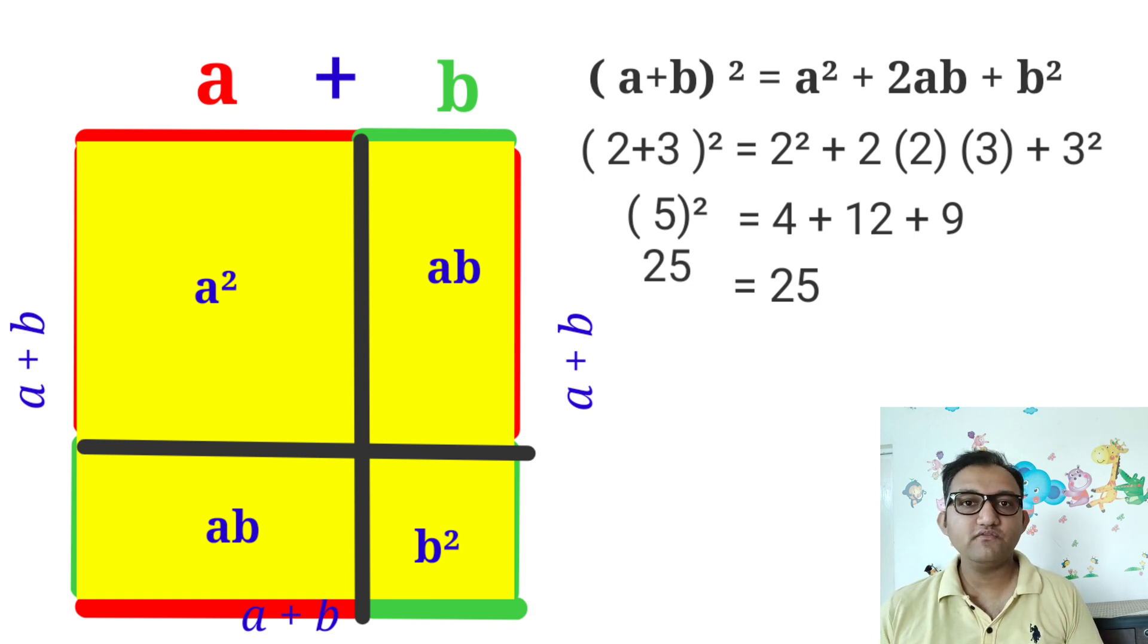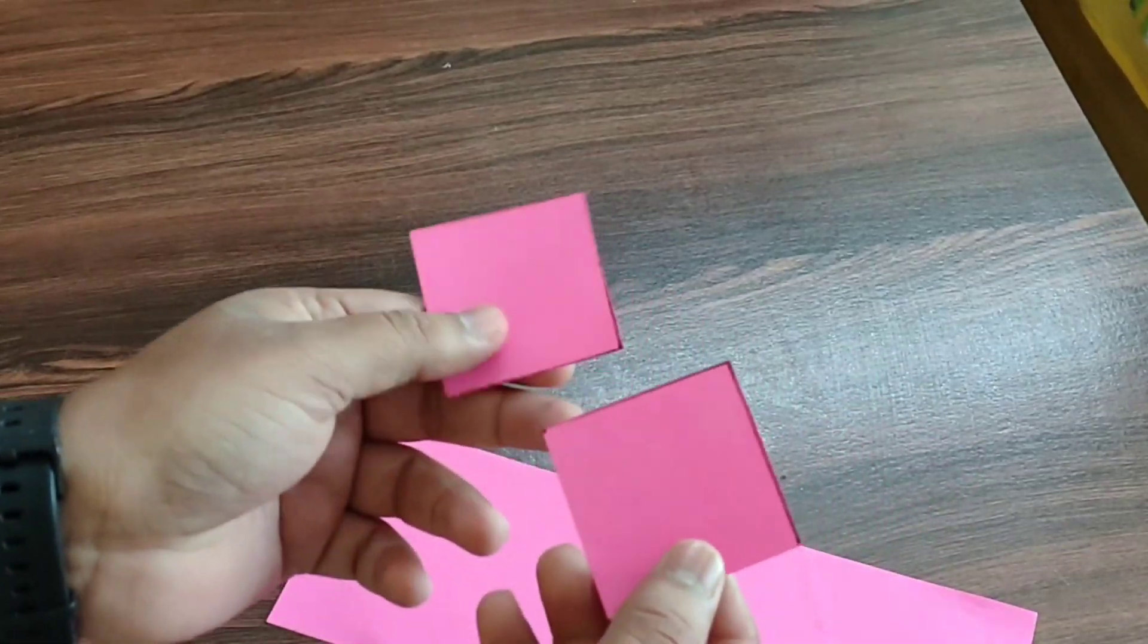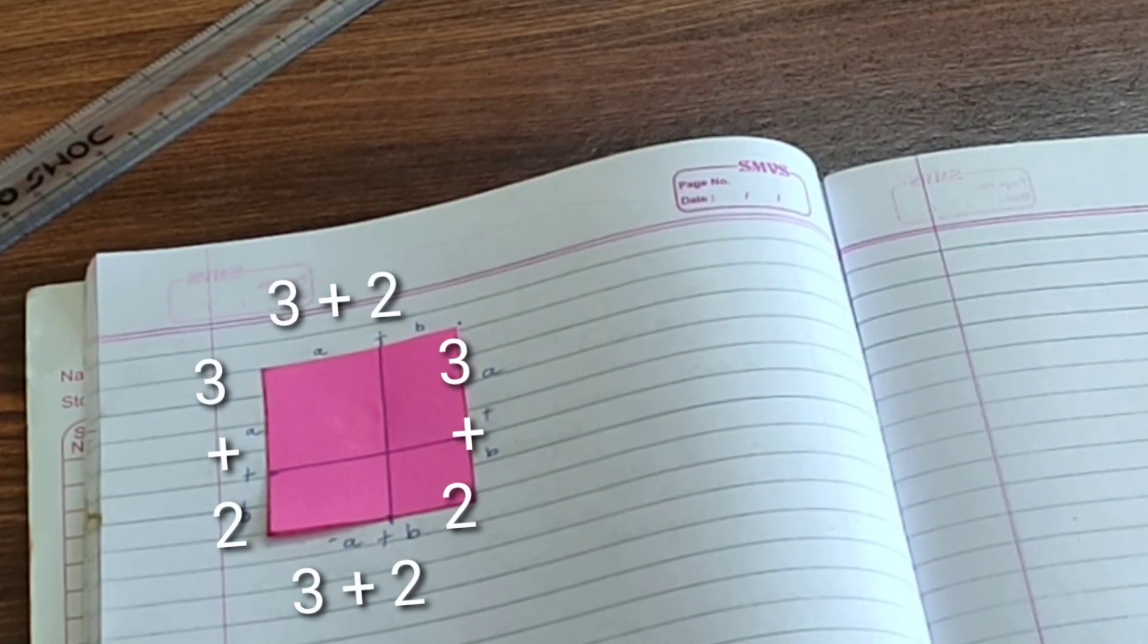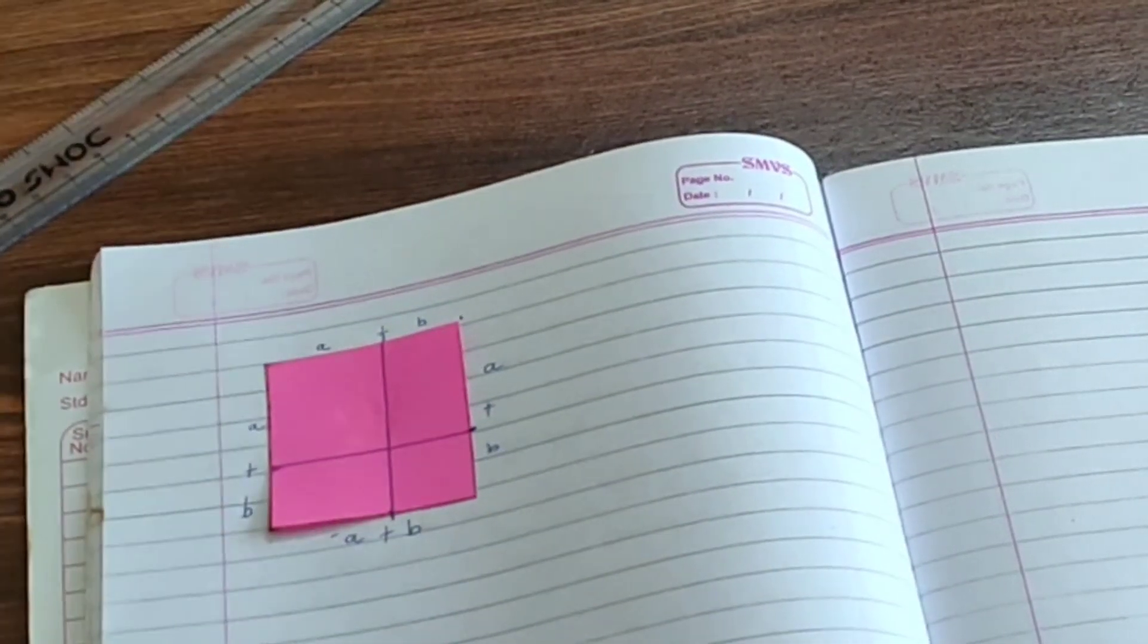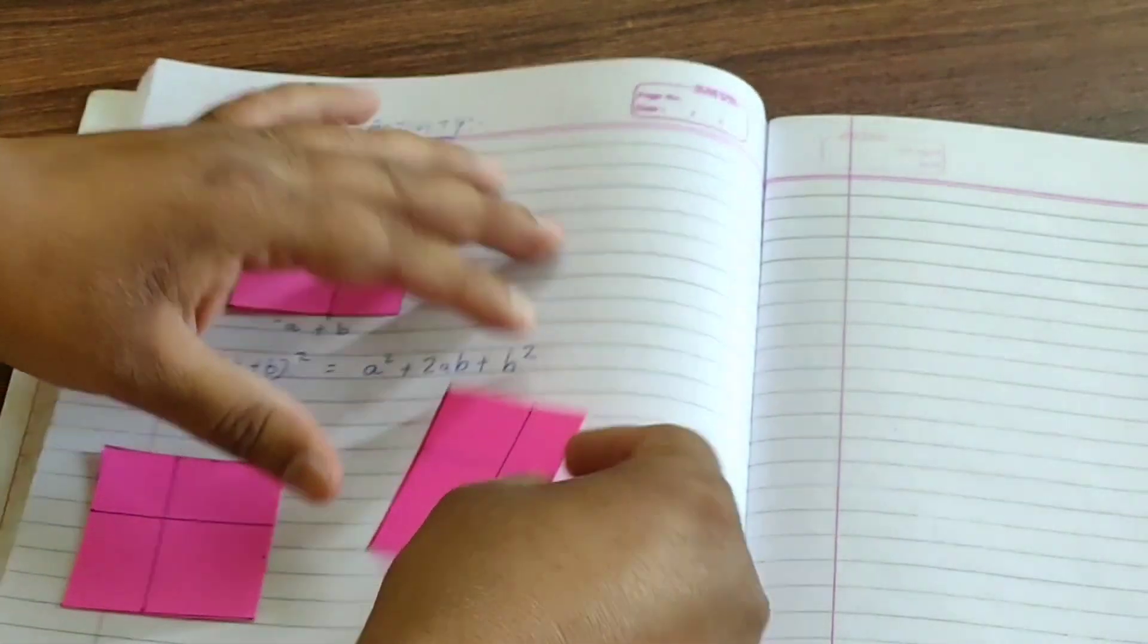Friends, first of all we need 5 by 5 inch pieces of paper, three pieces actually. Then we'll draw a line like this, 3 + 2. First we will paste it like this to show a² and b².